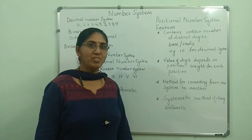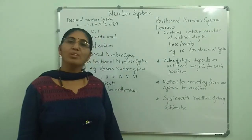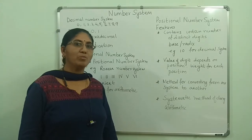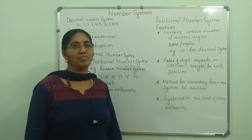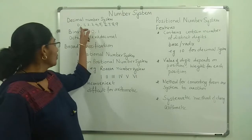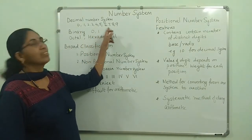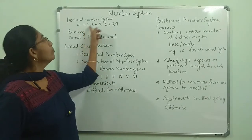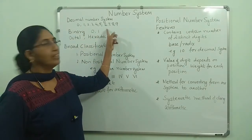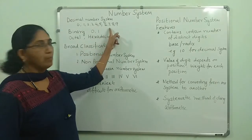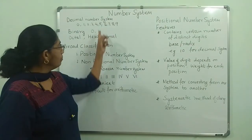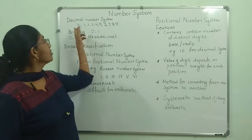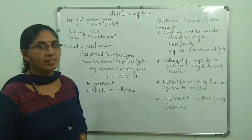Today let us discuss number systems. We are familiar with the decimal number system. The digits in the decimal number system are 0, 1, 2, 3, up to 9. That is our decimal number system — there are 10 numbers, so the base is 10. It consists of 10 numbers in total from 0 to 9. That is our decimal system.